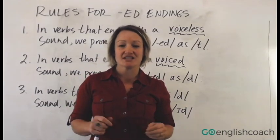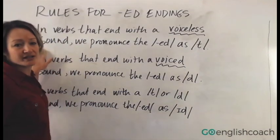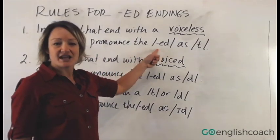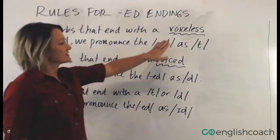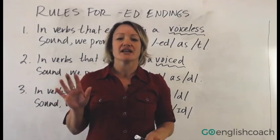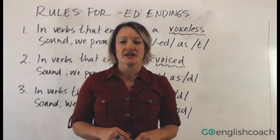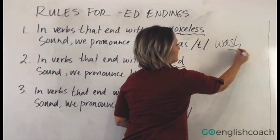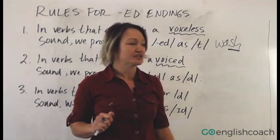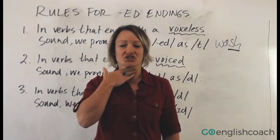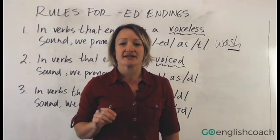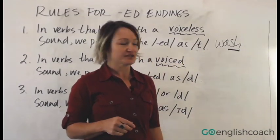Here are your rules for pronouncing the '-ed' endings in the past tense. Number one: in verbs that end with a voiceless sound, we pronounce the '-ed' as a 't' sound. Voiceless means there is no vibration in your throat — that's the easiest way to tell if a sound is voiceless or voiced. The example is 'wash.' The final sound is the 'sh' sound. If you hold your hand here and say 'wash,' there's no vibration — only air coming out of your mouth. That means it's voiceless, so we use the 't' sound: 'washed.'